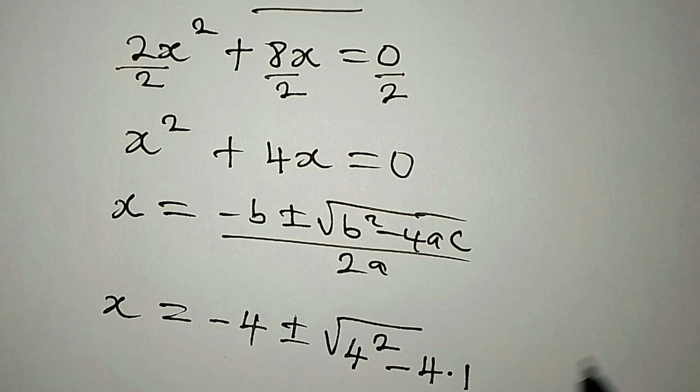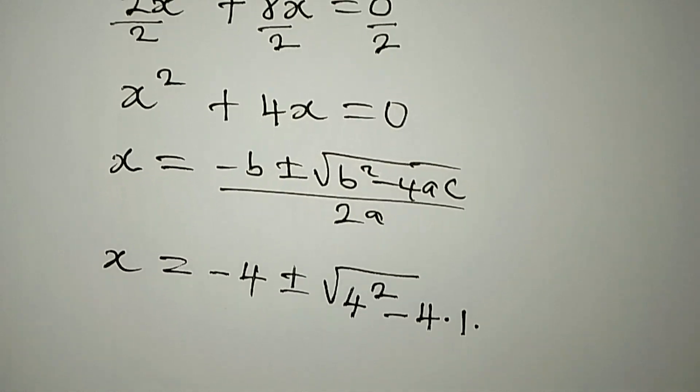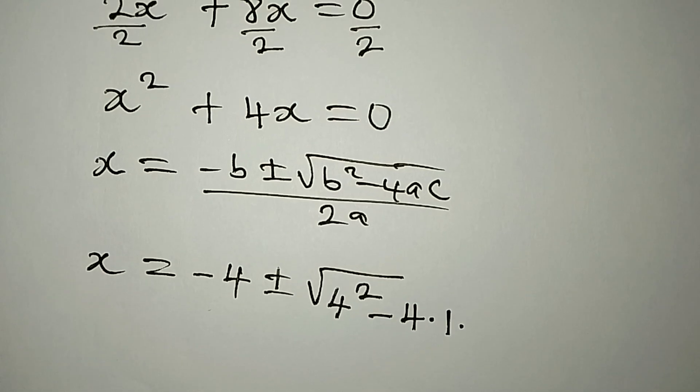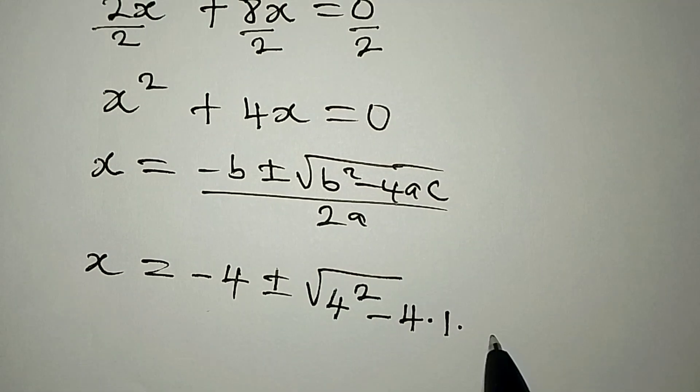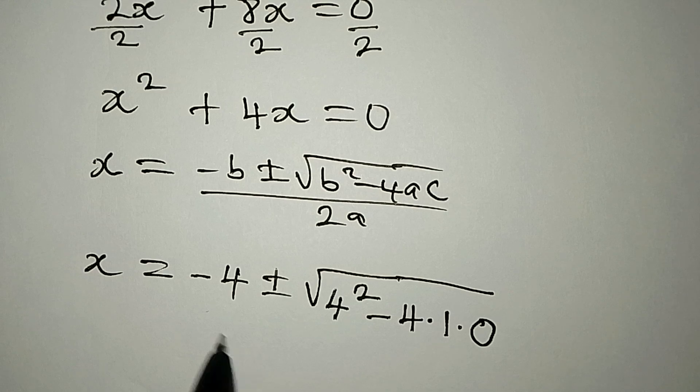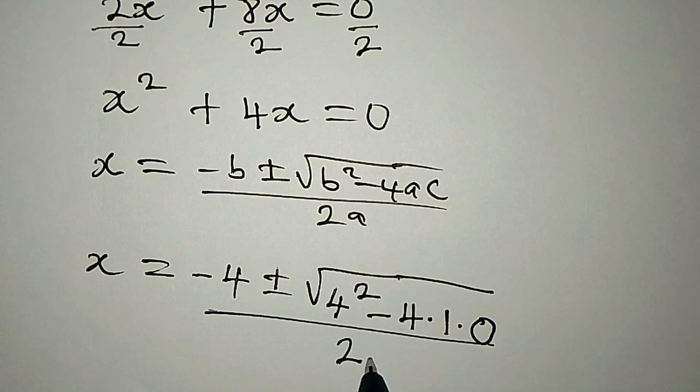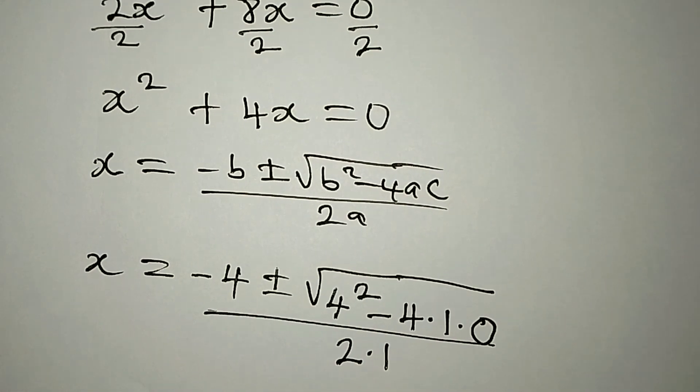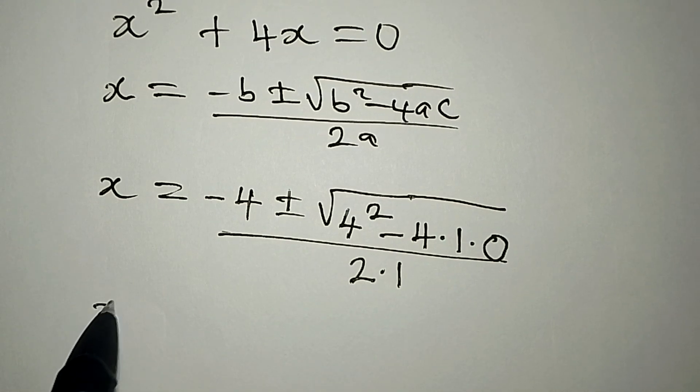Then minus 4 multiply by 1, because our a is the coefficient of x², then multiply by c. And since we are not having c over there, we will multiply this by 0. So this will now be over 2 times 1, because a is 1.